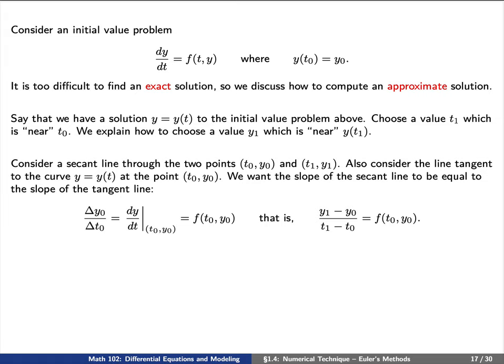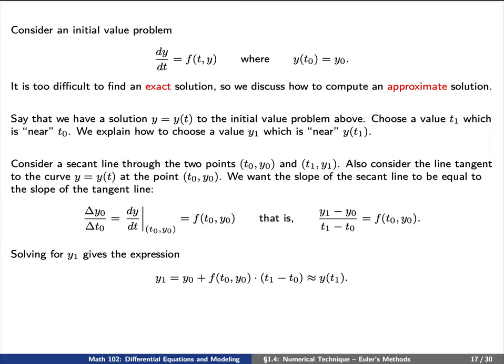So in other words, if we take a look at the change in y divided by the change in t, we have the slope of y1 minus y0 divided by t1 minus t0 must be equal to f of t0, y0.